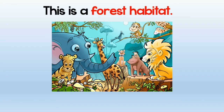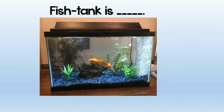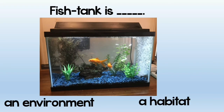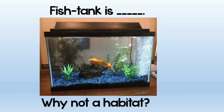Now look at this forest habitat and spot some animals and other living things. Let's talk about this fish tank — a fish lives in this tank. Do you think it's an environment or a habitat? Of course it's a place around the fish, so it's an environment. But why is it not a habitat? A fish tank is man-made and it's not the natural place of the fish, so it is not a habitat.